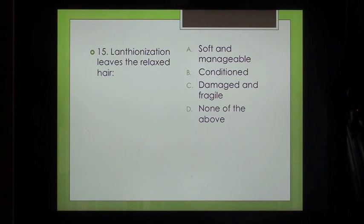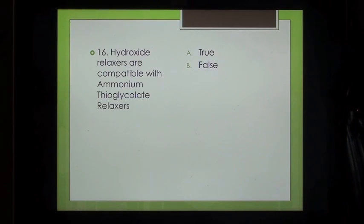Question 15: Lanthionization leaves the relaxed hair: A. Soft and manageable, B. Conditioned, C. Damaged and fragile, D. None of the above.